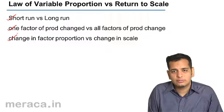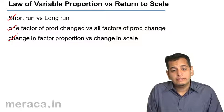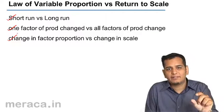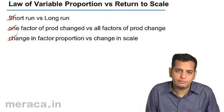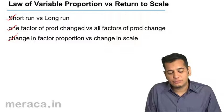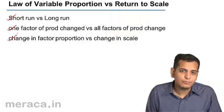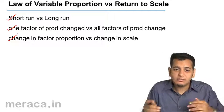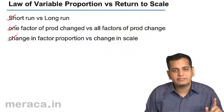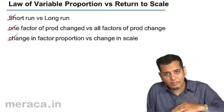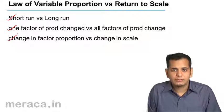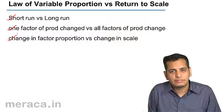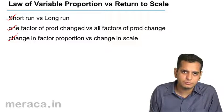The third and last point of difference: in the law of variable proportion, there is a change in the factor proportion — that is, one factor changes in relation to other factors. Since all the other factors are constant except for one, it is obvious that the proportion of the factors amongst themselves will change. If I keep on increasing labor, while land, capital, and machinery remain constant, then the proportion of land to labor, machinery to labor, and capital to labor will all change.